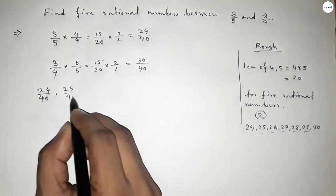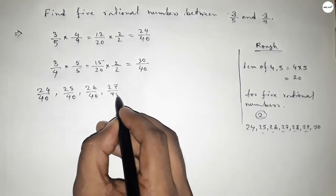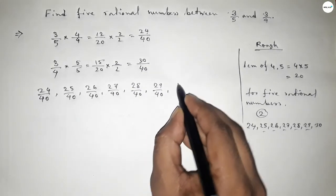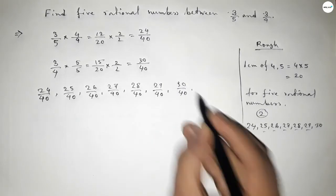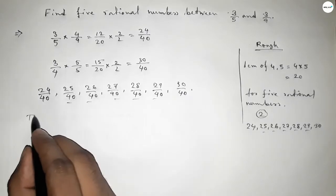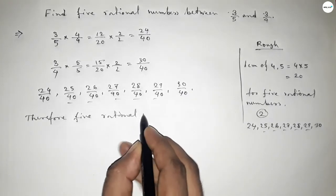So here all the rational numbers are: 24 over 40, 25 over 40, 26 over 40, 27 over 40, 28 over 40, 29 over 40, and last one 30 over 40. And these are the 5 required rational numbers between 3 over 5 and 3 over 4.